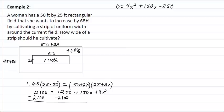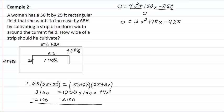0 equal to 4x squared plus 150x minus 850. All these are divisible by 2, so let's divide by 2. So we have 0 equals 2x squared plus 75x minus 425. So we're going to throw this in the quadratic formula because it will be a little bit hard to factor. So we're going to have negative 75 plus or minus the square root of 75 squared minus 4 times 2 times a negative 425 all over 2 times 2.